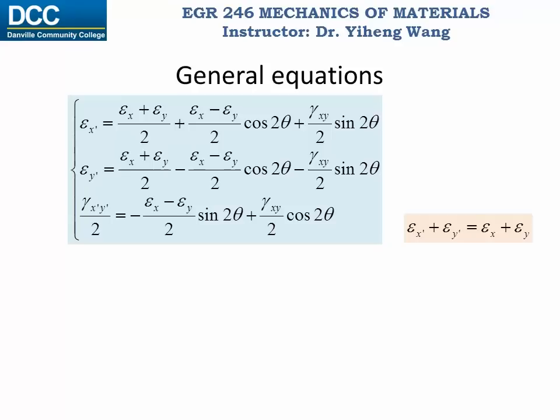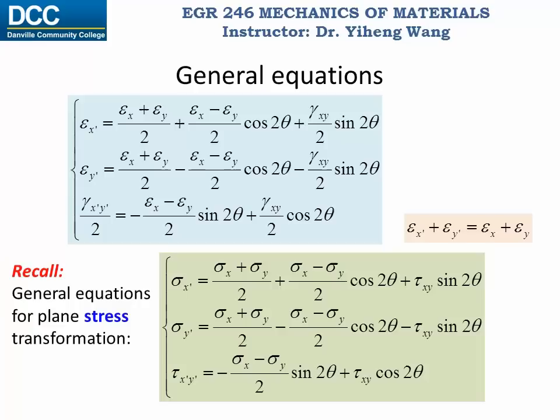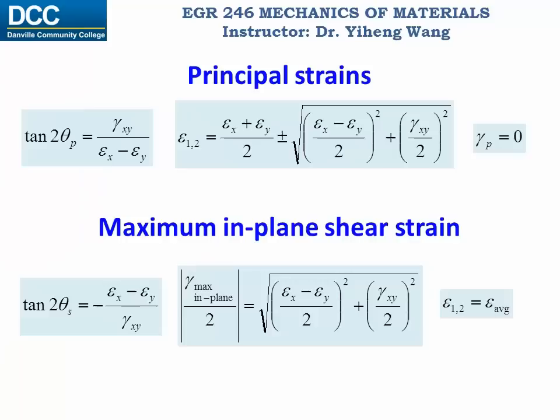You might already notice the similarity between these general equations and the general equations for plane stress transformation. In fact, you can get exactly the same set of equations if you replace sigma x with epsilon x, replace sigma y with epsilon y, and replace tau xy with gamma xy over 2. Similar to plane stress transformation, we can apply calculus to find the principal strains and maximum in-plane shear strain, as well as the associated orientations.